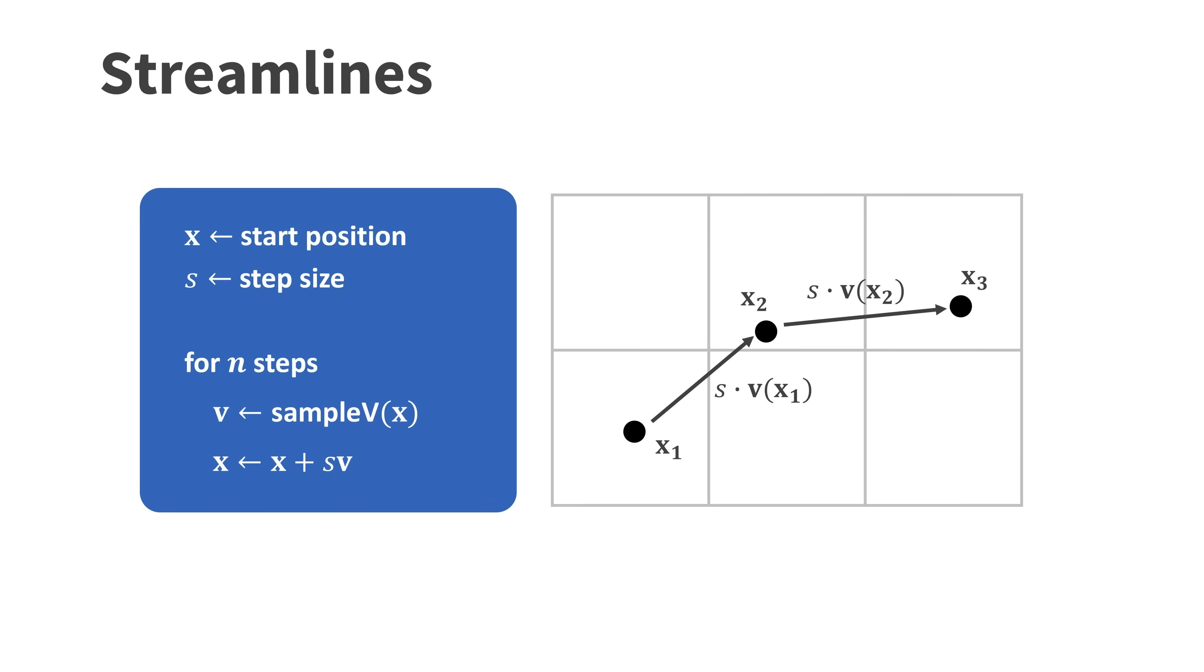Visualizing streamlines is simple too. Here I set the position variable x to an initial location and choose a step size s. Then for n steps I first sample the velocity field at x and update x by adding s times v to it.